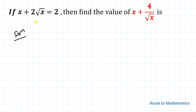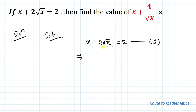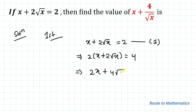I am going to solve this question in two ways. Let's proceed with the first method. We have given x plus 2 root x equals 2 — let's take it as equation 1. Now multiplying both sides of the equation by 2, we have 2 multiplied with x plus 2 root x equals 4. So this implies 2x plus 4 root x equals 4 — let's take it as equation 2.